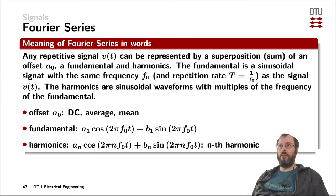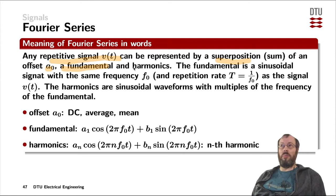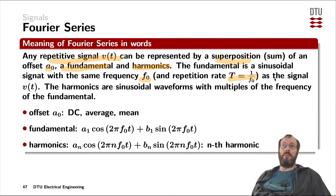That was one way of defining the Fourier series. Another way is by words. The meaning of the Fourier series in words is that you can use any repetitive signal — not sine waves only — defined as V as a function of time, that can be represented by a superposition, by the summation of an offset (that's our DC value A0), a single fundamental, and its harmonics. The fundamental is a sinusoidal waveform with the same frequency F0 as our original signal, or equivalently 1 divided by the period time T.